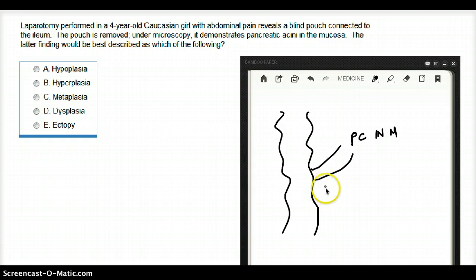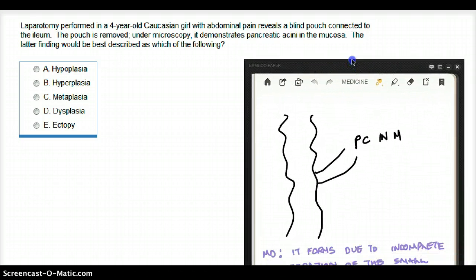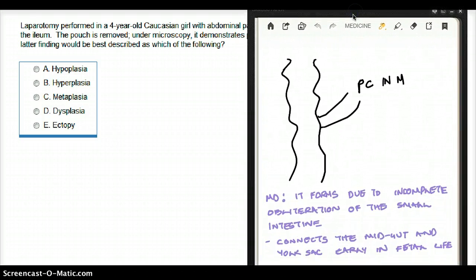So what are we looking at? We are looking at Meckel's diverticulum. What is Meckel's diverticulum? Meckel's diverticulum results from incomplete obliteration of a duct between the yolk sac and the midgut.